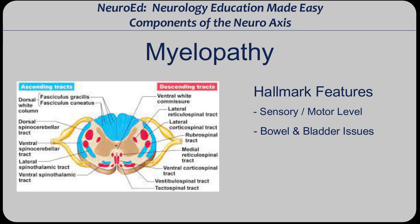We are now done with spinal cord. Next up is brainstem. Same routine — figure out the hallmark signs and symptoms of a brainstem lesion. With the brainstem it can be extremely difficult, so what I want you to do is pick two syndromes randomly — let's say lateral medullary and lateral pontine. Compare the two, see how they're different, how they're the same, and how they're unique. Trust me, if you just do this little bit of homework and really try to understand this, brainstem lesions will become very, very easy.